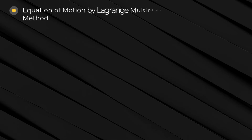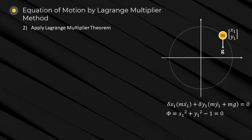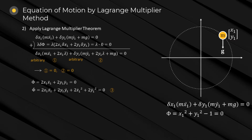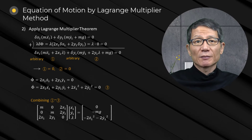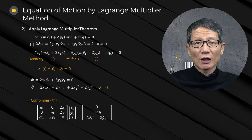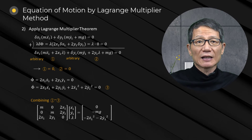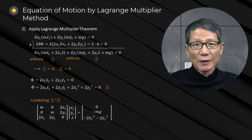Another method is to use the Lagrangian multiplier theorem. The equations of motion and constraint can be combined by introducing a Lagrangian multiplier as one augmented equation of motion. The virtual displacement becomes arbitrary after combining, since the kinematic constraint is satisfied by the virtual displacement.